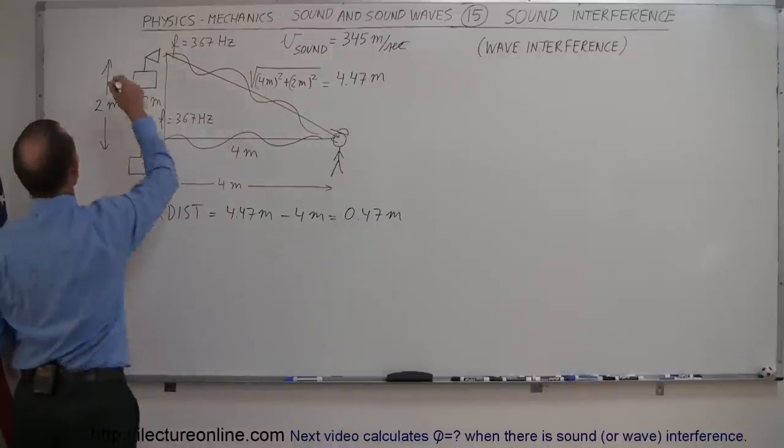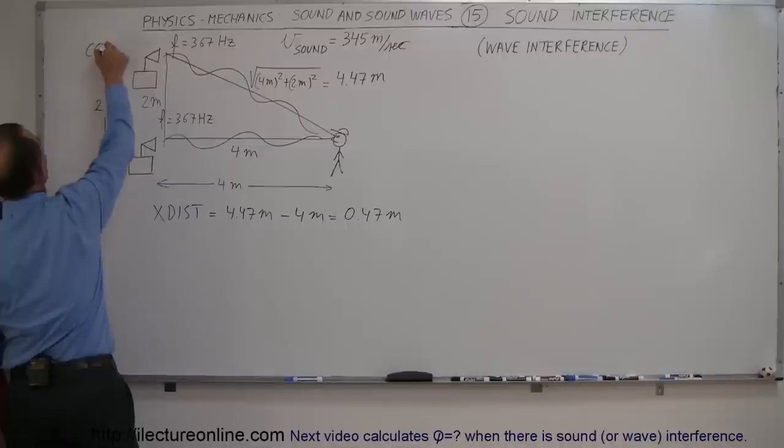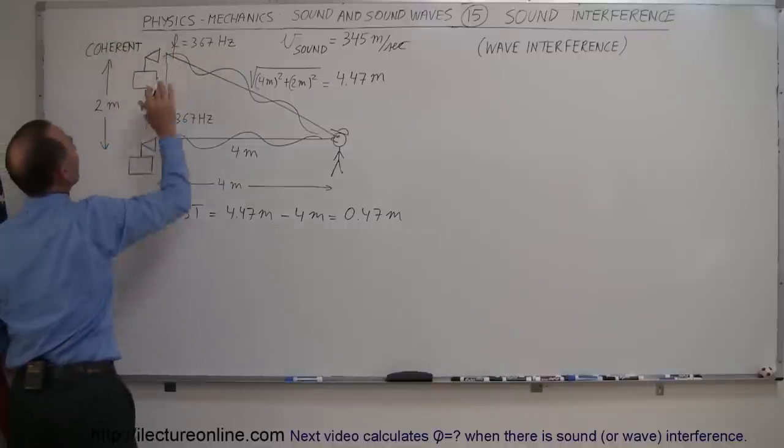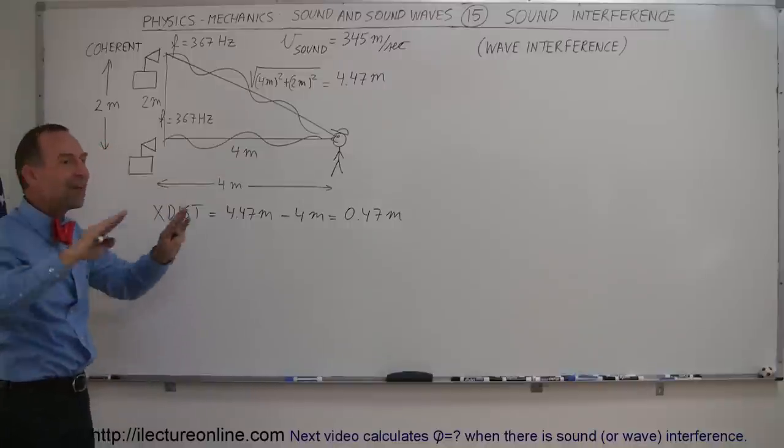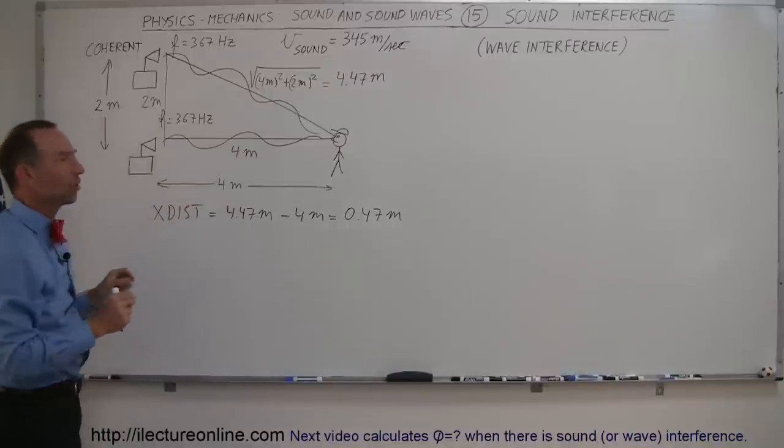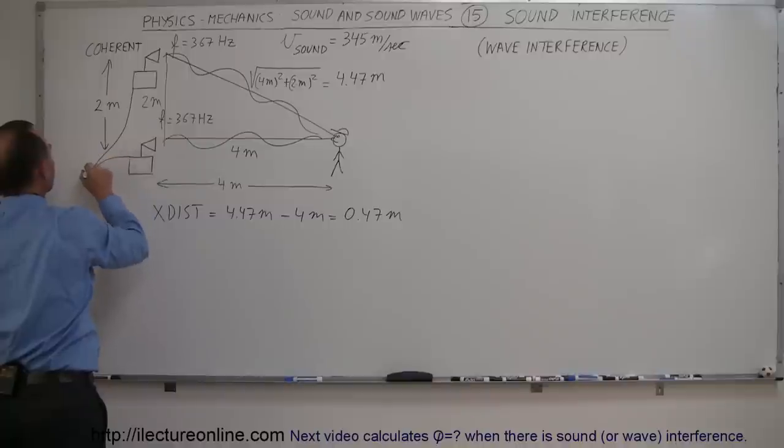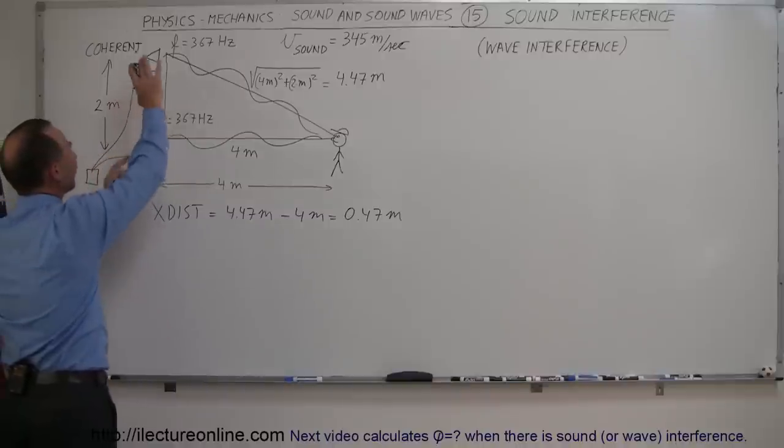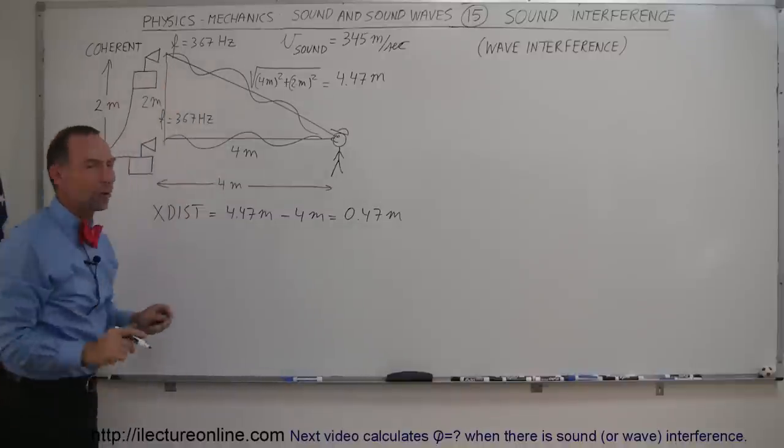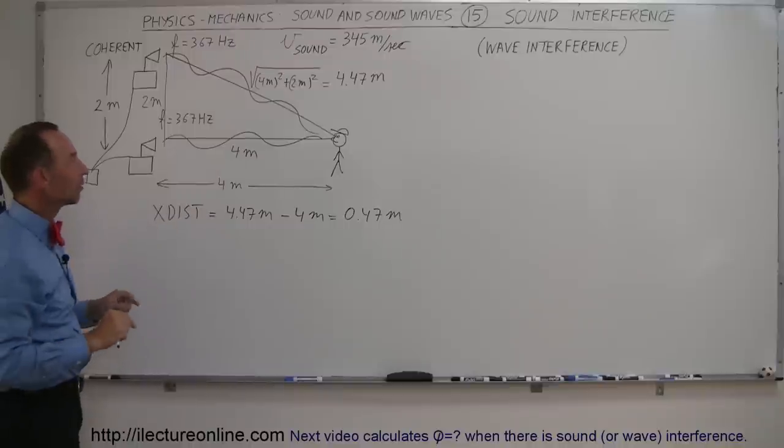So that's what we call the extra path length that this sound wave has to travel. Now assume that these two speakers are what we call coherent. Coherent means that they not only have the same frequency, but that they're in phase as the sound leaves the two speakers, so they must be driven by a single source that keeps those two in sync.